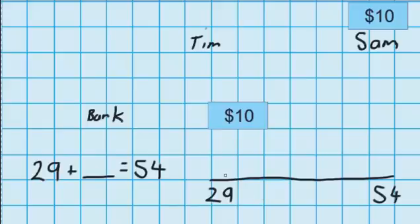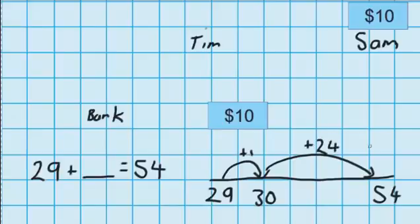We can put 29 on here and we can put 54 on, and just like we've done in the past we could do a small jump up one which would take us to 30, which is a nice tidy number. And from 30 it's easy for me to jump up to 54. That's a jump of 24.